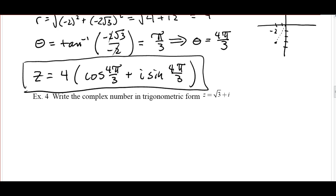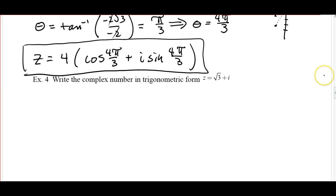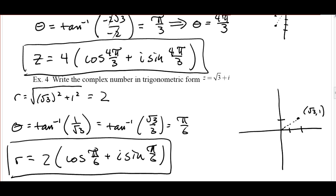Go ahead and pause the video, and when you restart it you'll see the solution so you can check it. If you have questions, write those down and ask them next time you see me. Here's the solution for example 4: the modulus is 2, the argument is π/6. Since we're in the first quadrant, we don't have to make any changes. Once you have r and theta, you can write your complex number in trig form.